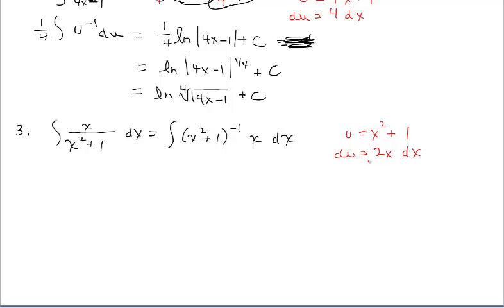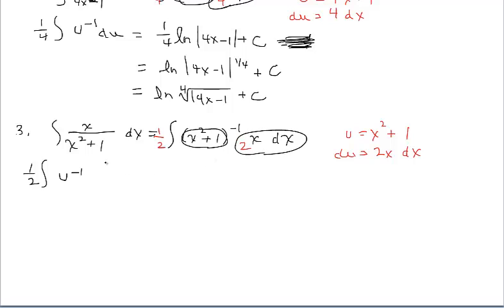Let's do u-substitution. This becomes u to the negative 1. I need to account for x dx, so I bring in a 2 and pull out a 1 half. This will become u to the negative 1, and all of the x dx gets replaced with du. This exactly matches the log rule, so we're ready to integrate: 1 half, natural log, absolute value of x squared plus 1, plus c.